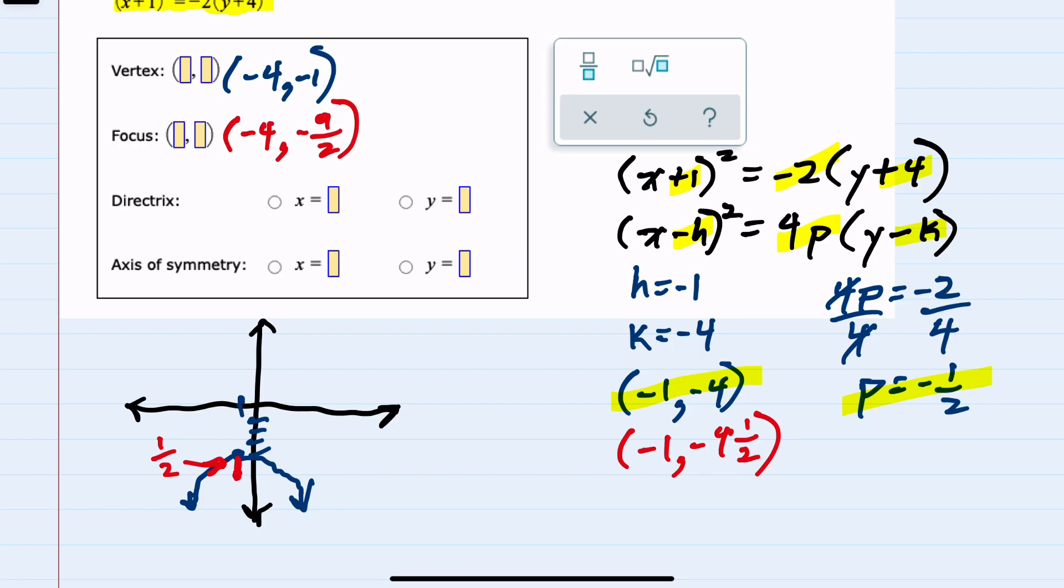Next, we're asked for the directrix. I know that the directrix is the line that is p units away from the vertex. Since our parabola is opening down, our directrix will be horizontal, which means it will be y equals, and the value of this line is half a unit above our vertex. So half a unit above y equals negative 4, this would be y equals negative 3 and a half, or negative 7 halves.